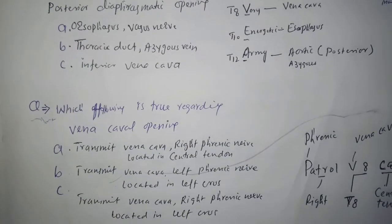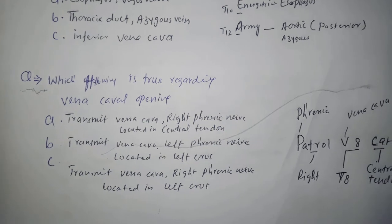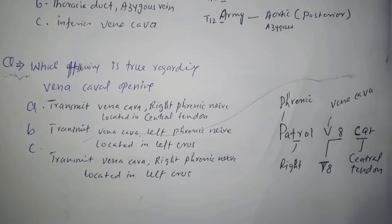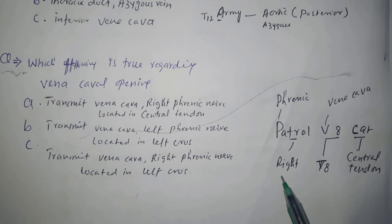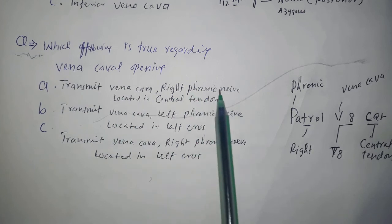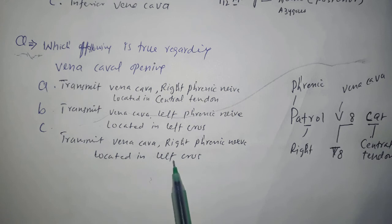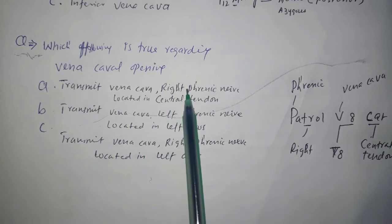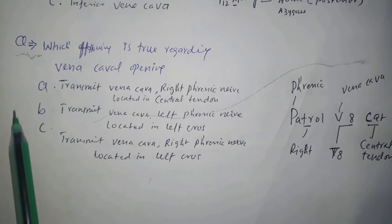For the vena caval opening MCQ, using the 'Patrol V8 Car' mnemonic: V is for vena caval opening (inferior vena cava), 8 is for T8, and Car is for central tendon. The vena caval opening transmits the inferior vena cava and right phrenic nerve, and is located in the central tendon. The answer is A.